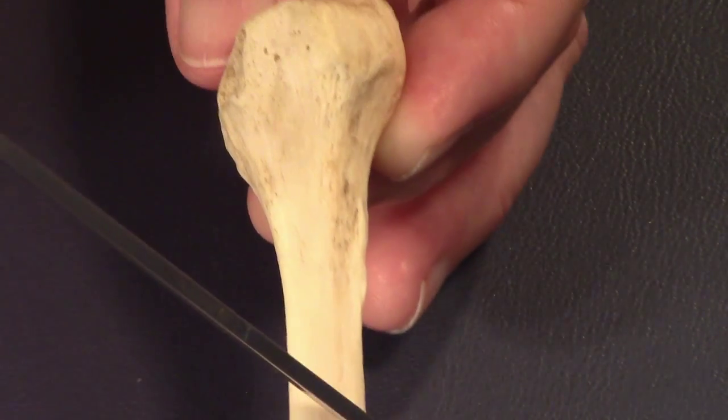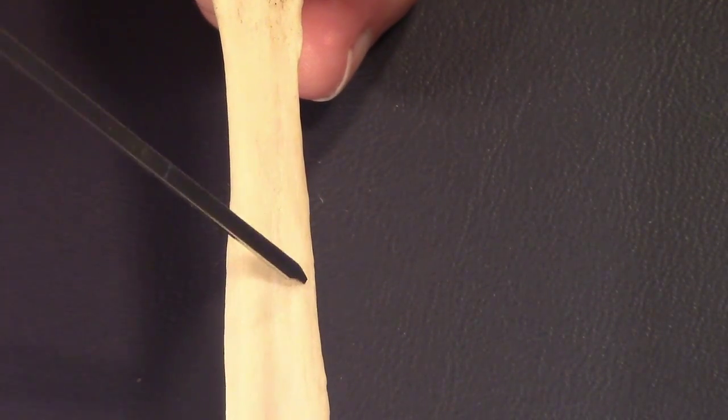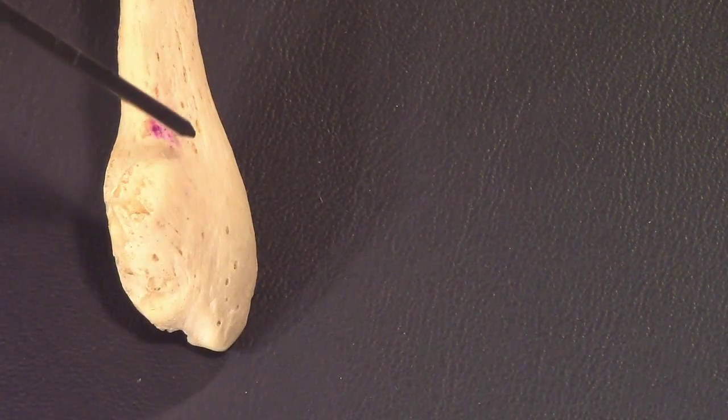So if this is medial, then this surface would be the lateral surface. Okay, so lateral surface is here. Lateral surface all the way down. It kind of peters out down here at the bottom, and then you get to the lateral malleolus which is right here. Some of those, you will be tested on these borders here.